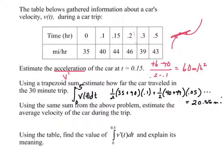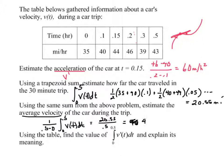All right. Using the same sum from the above problem, estimate the average. Well, average velocity means we do the 1 over b minus a. So for us, it's 0.5 minus 0 times the integral from 0 to 0.5 of v of t dt. So, essentially, we take our 20.55 that we got above. We divide it by 0.5. We get 41.1 miles per hour.